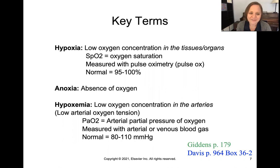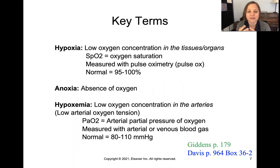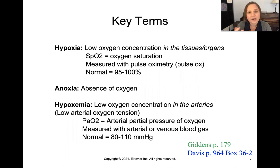Anoxia is the lack of oxygen. Hypoxemia means low oxygen concentrations in the arteries — remember, arteries carry oxygenated blood from the heart. This is measured with the partial pressure of oxygen in the arteries, called PaO2, using a venous or arterial blood gas. The normal range for PaO2 should be between 80 to 110 millimeters of mercury.